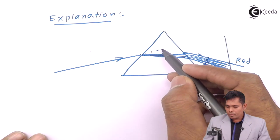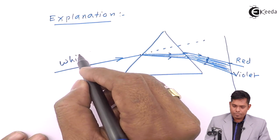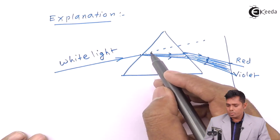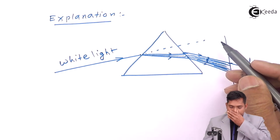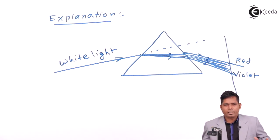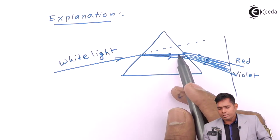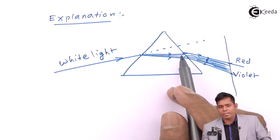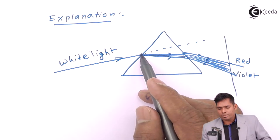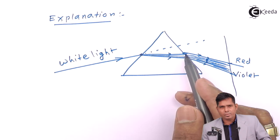You can see that the white light is supposed to go straight, but now it bends, it splits, and it is divided into many colors. And finally, here there is refraction, again there is refraction, so refraction takes place at two places — one at this surface and another at this surface. So twice refraction happens.